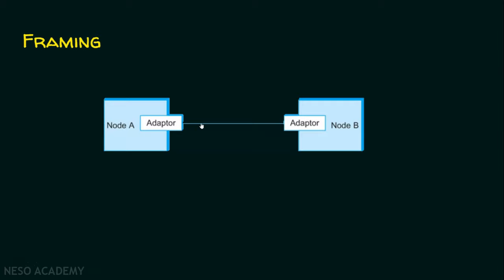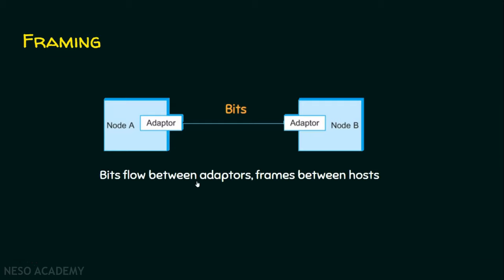Whenever zeros and ones are sent to the receiver, the receiver collects all the zeros and ones. The physical layer of the receiver — that is the adapter — collects all the zeros and ones and has to construct the frame. But the problem is: how does the receiver know what constitutes a frame? For example, if this computer sends 500 bits where 50 bits belong to frame 1, how does the receiver know that up to 50 bits are frame 1? Bits flow between adapters, and frames flow between hosts or nodes.